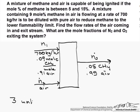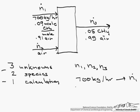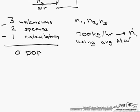Those three unknowns are N1, N2, and N3. We can do two independent species balances, or one species balance and one overall balance. In addition, we have a calculation that we can use. This calculation is from 700 kg per hour to a molar flow rate using an average molecular weight. So we have zero degrees of freedom, which means we can then solve this problem.